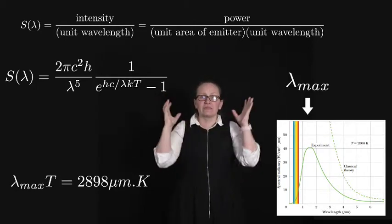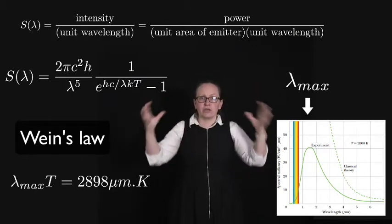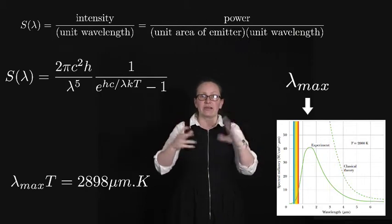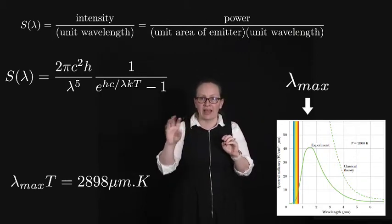And this is actually known as Wien's law. And it tells us which wavelength a blackbody radiator with temperature T will emit the most amount of radiation at.